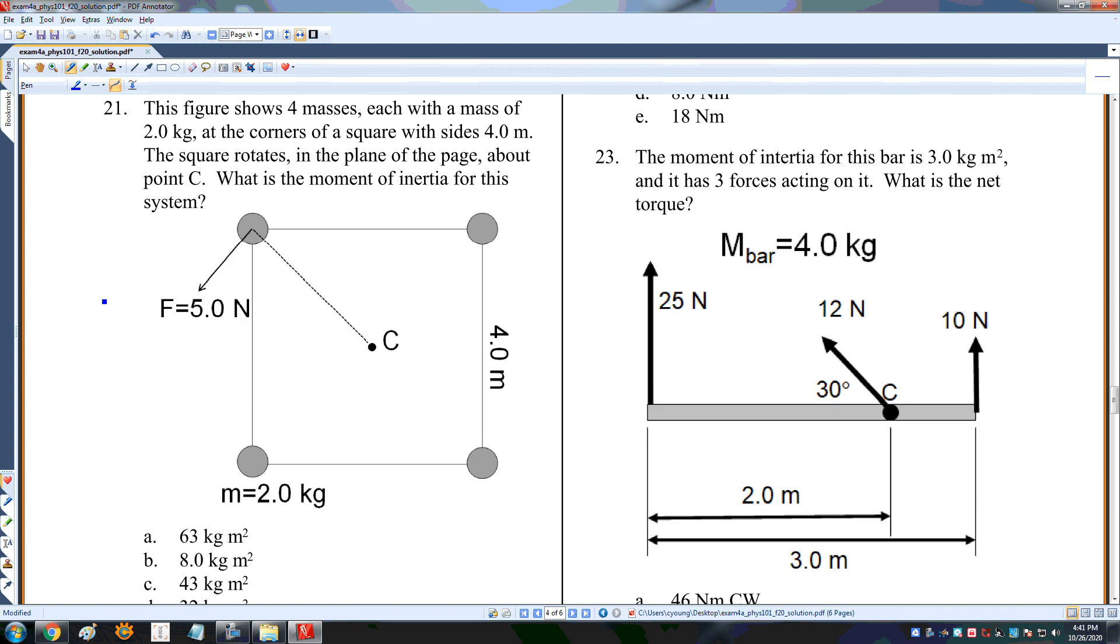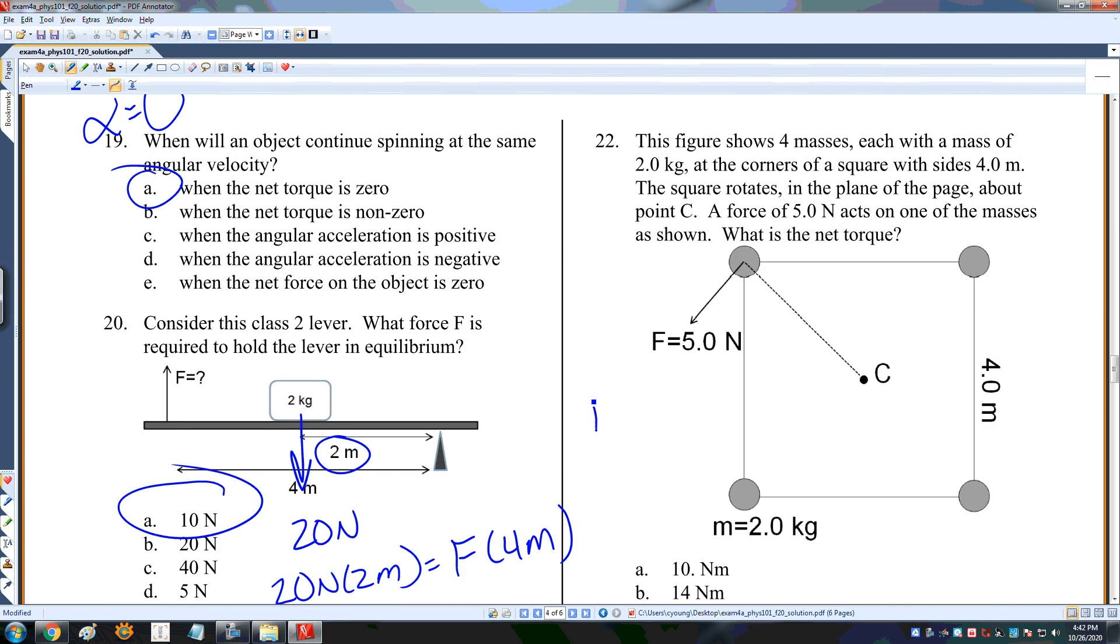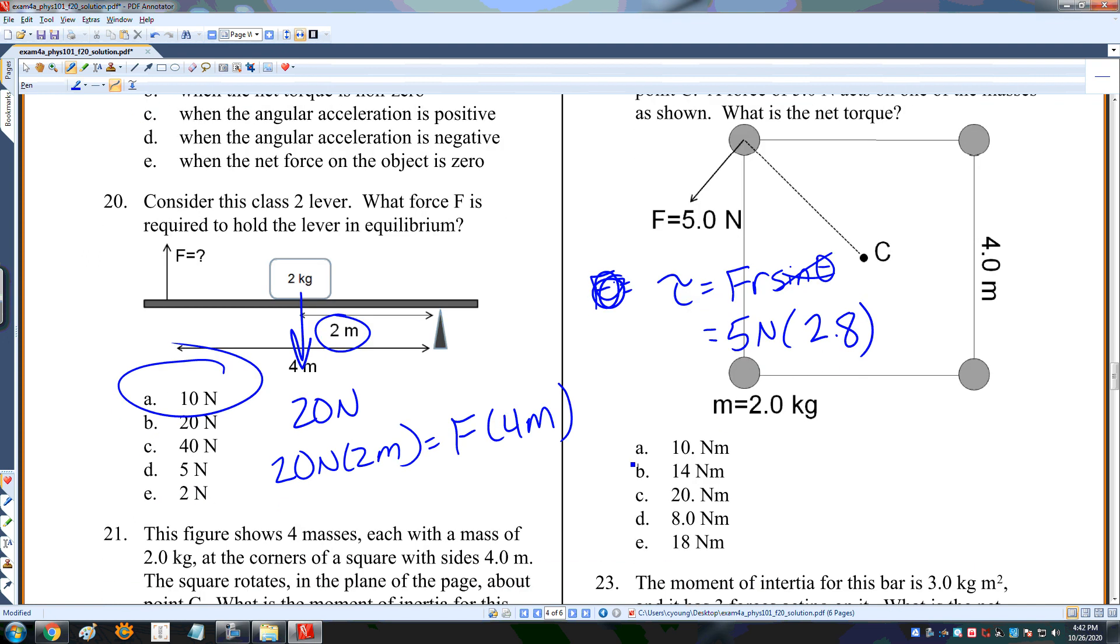This figure shows four masses, each with a mass of 2 kilograms in the corners of a square. The square rotates in the plane of the page about point C. What is the moment of inertia? I need to know what this distance is. This is a triangle, so this is the square root of 2 squared plus 2 squared, which is 2.8. I is the sum of MR squared, treating it like discrete particles. That's 2 kilograms times 2.8 meters squared. I multiply that times 4 because I have 4 of them. That's 63. What is the net torque? Net torque is FR sine theta. Theta is 90, so that becomes 1. It's 5 newtons times 2.8, which is 14 newton meters.